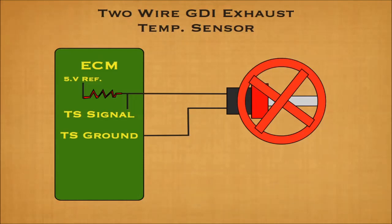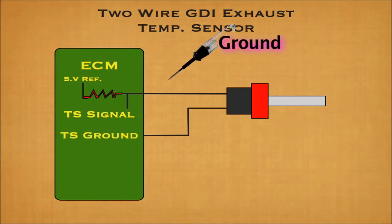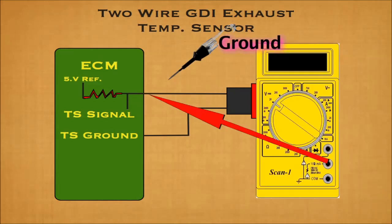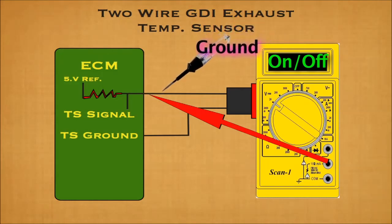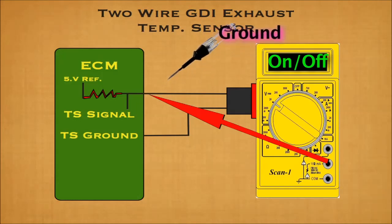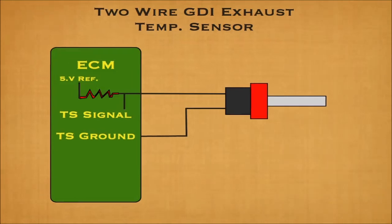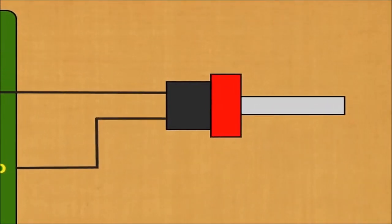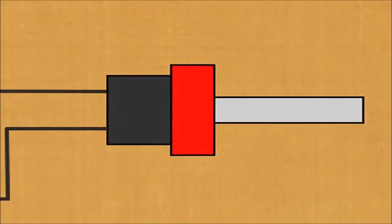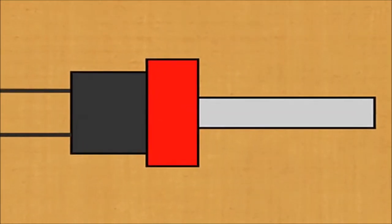Third, reconnect the sensor connector and connect your test light to chassis ground. Also connect the multimeter to the sensor signal wire. Then, momentarily ground the signal wire on and off while observing the multimeter voltage change. If you see no change, then the ECM is faulty. If you see a change, then the ECM circuit for this sensor is fine. If the temperature sensor is stuck in one value or giving an erroneous value, the only recourse is to replace the sensor, since you have already proved your ECM circuitry.